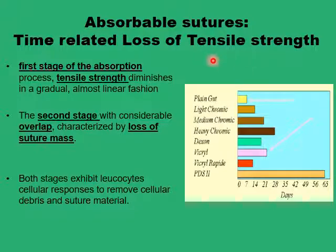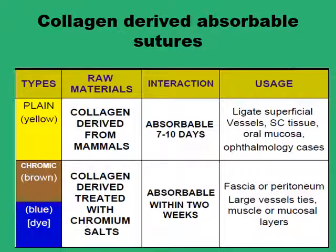The two processes of loss of tensile strength and absorption of the whole suture are different. Tissues lose their tensile strength first by degradation, and then in the second stage they lose the mass of the tissue itself by absorption, whether by an inflammatory reaction or hydrolysis for the synthetic sutures.